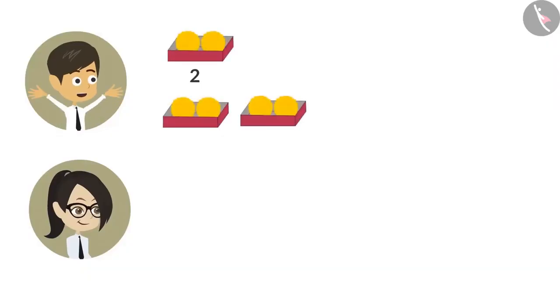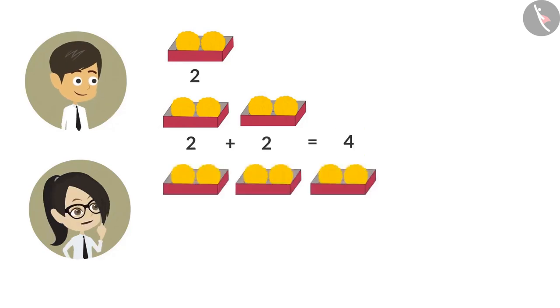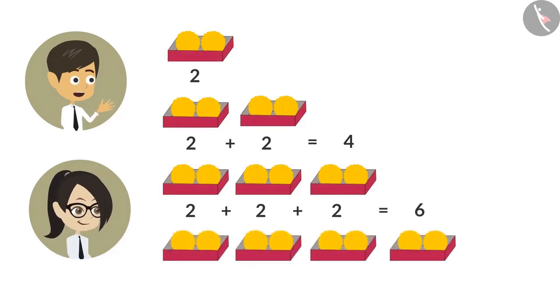To know the ladoos in two boxes, we have to add two, two times. So the answer is four, which means there are four ladoos in two boxes. To know how many ladoos are in three boxes, we add two three times. The answer is six. For four boxes, we add two four times. The answer is eight.